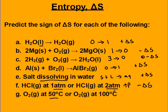And finally, 50 degrees or 100 degrees — at a higher temperature, the molecules will be moving faster, so there's more randomness in their motion. So that's going to be a positive delta S.